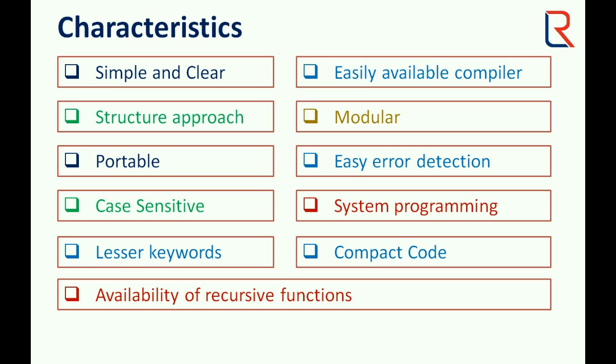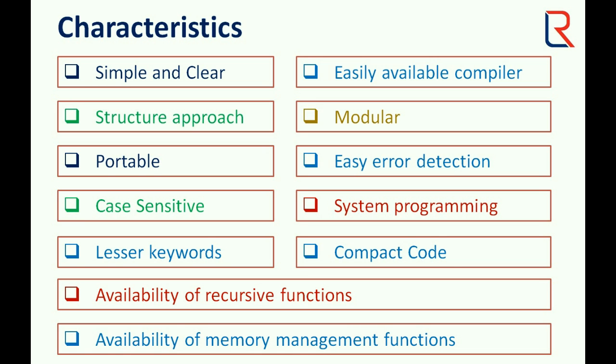Recursive functions help us to reduce lines of code as well as easy to remember. Availability of memory management functions. To save the memory and improve the efficiency of program, various memory management functions are available in C like malloc, calloc, realloc.